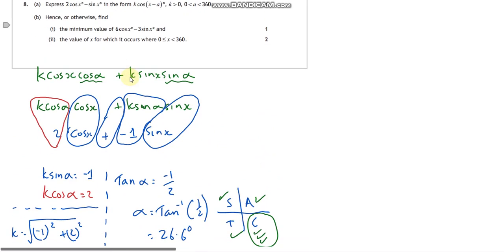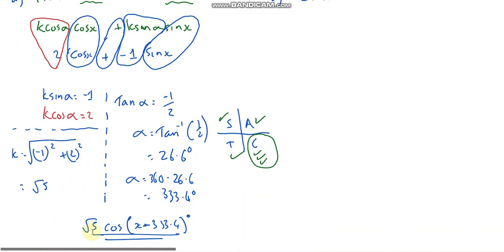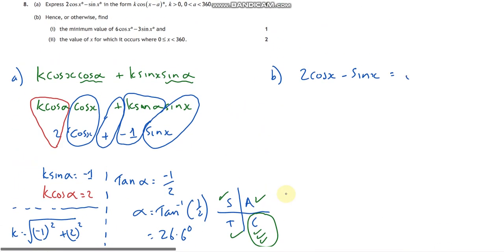Find the minimum value of this. Okay, so for part b here, let's think. I've just worked out that 2 cos x take away sine x can be rewritten as root 5 cos x take away 333.4. That's what I just did there. Now they're saying, what's the minimum value of 6 cos x take away 3 sine x? Well, how do you get from here to here? You're multiplying by 2, aren't you?